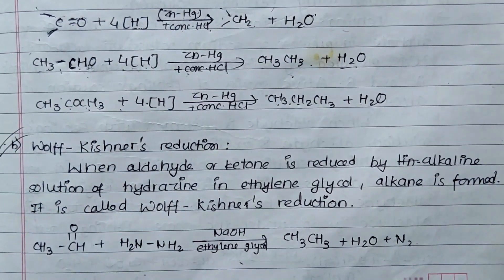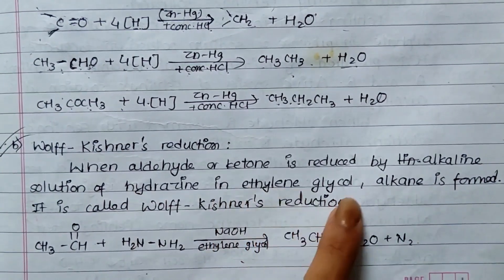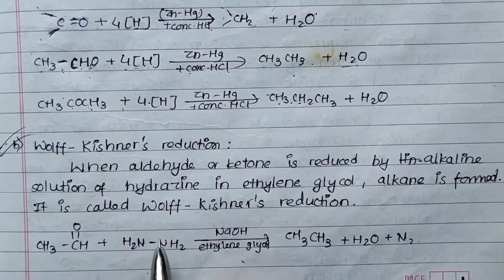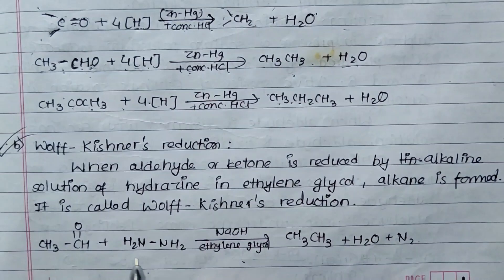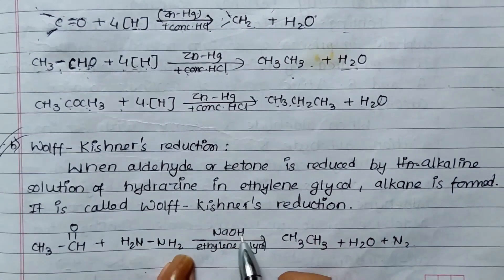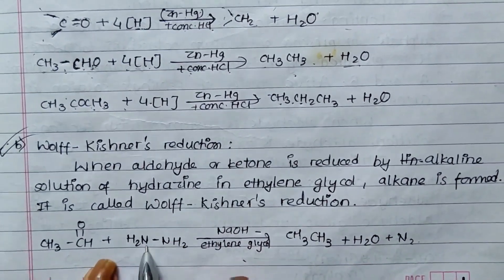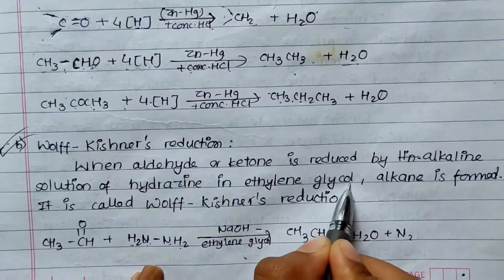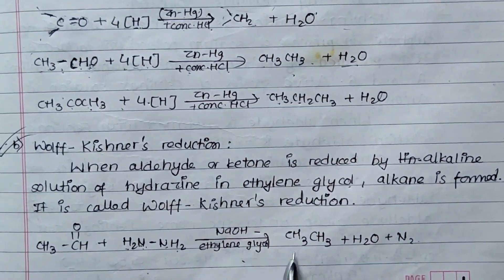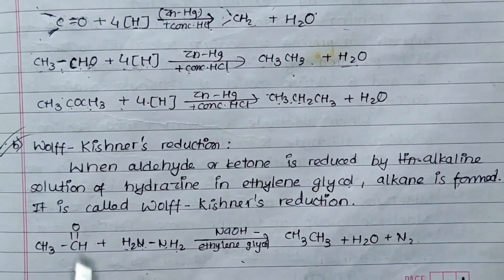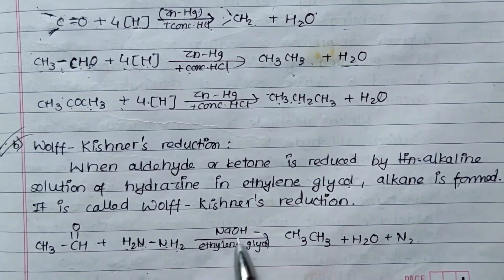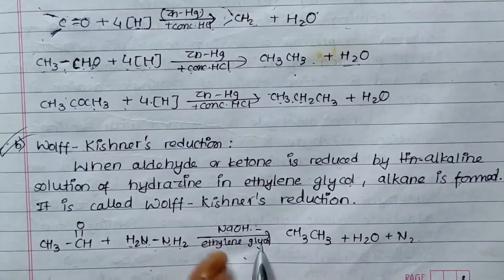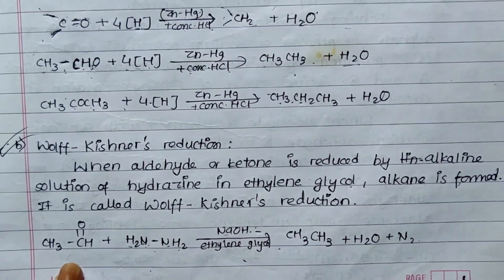When aldehyde or ketone is reduced by alkaline solution of hydrazine in ethylene glycol, alkene is formed. It is called Wolf-Kishner reduction. Aldehydes and ketones are reduced by alkaline solution of hydrazine — hydrazine means NH2-NH2 — to give CH2. Also, CHO reacts in presence of alkaline solution of hydrazine in presence of glycol.